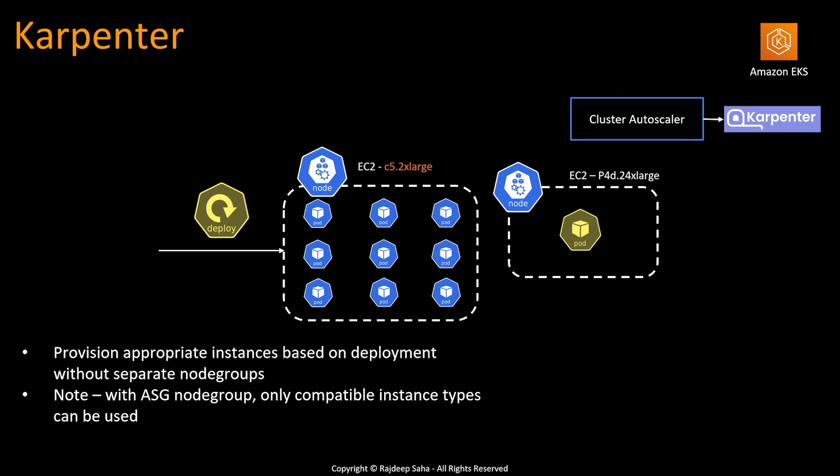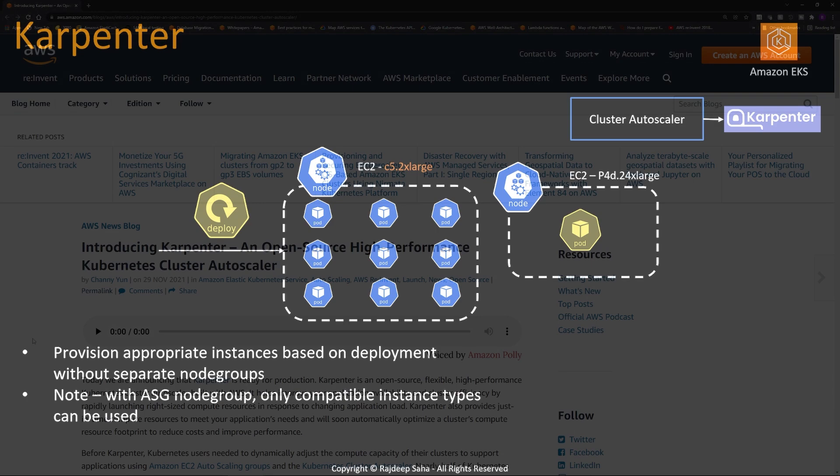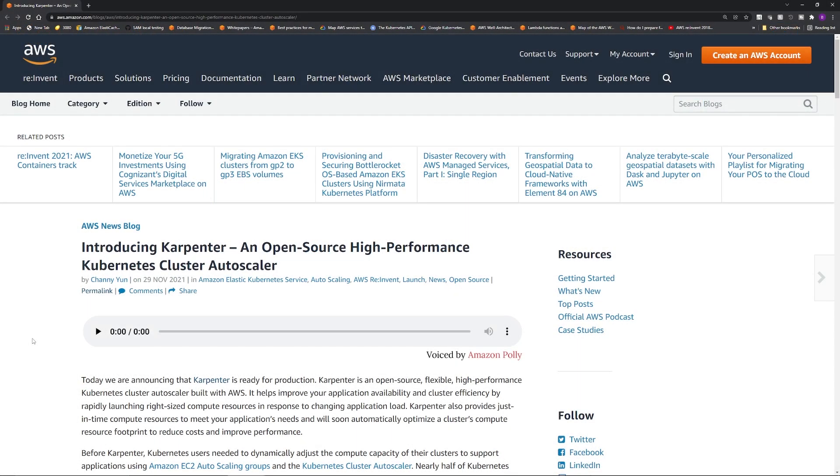Note that even with a traditional autoscaling group you can mix different instance types in the same node group, but you can only put compatible instance types — the vCPU and memory of instances in a traditional autoscaling group node group need to be the same. So going back to the previous example, you cannot mix a p4d instance with an m5.large instance in a single node group. Karpenter solves this problem.